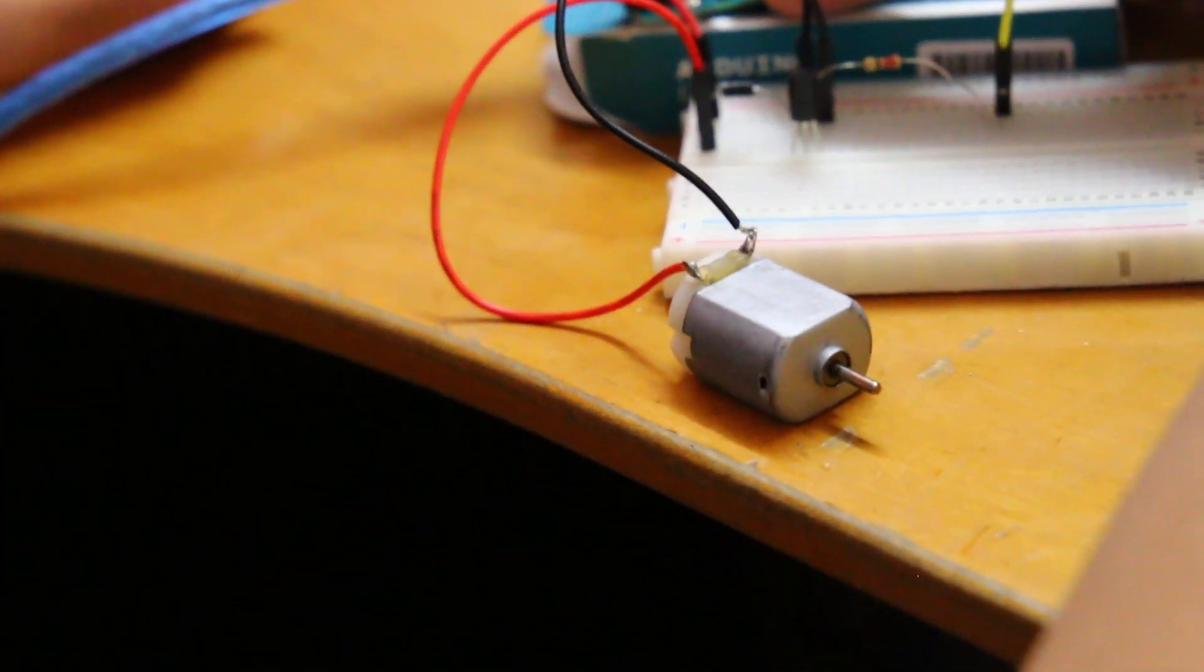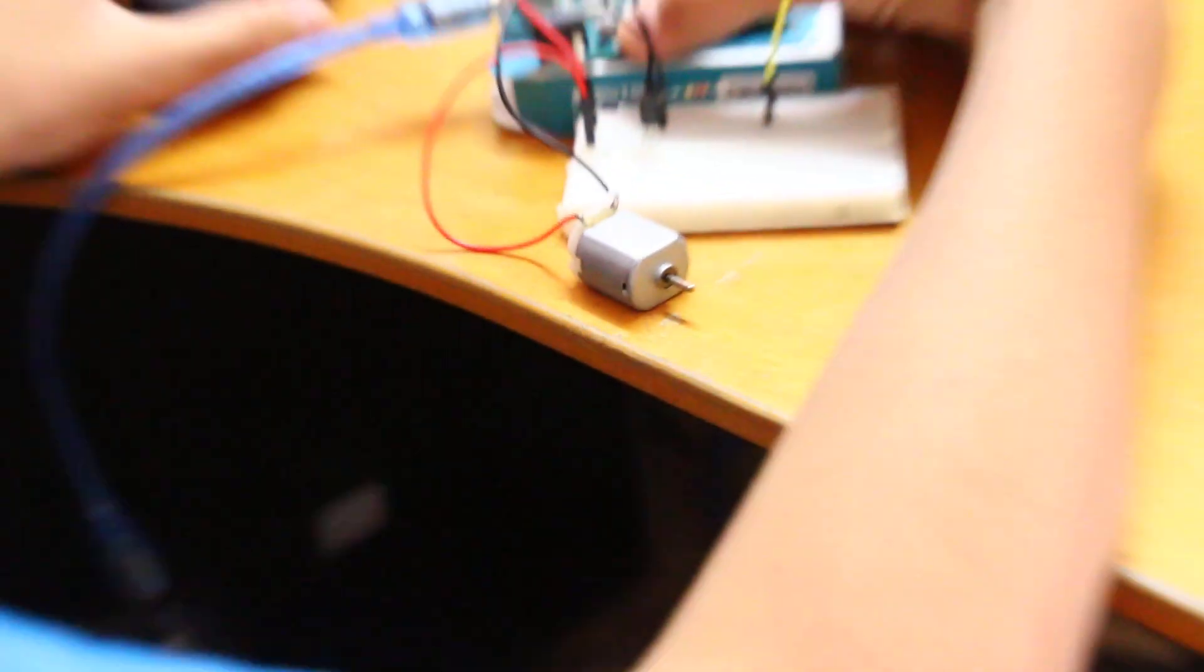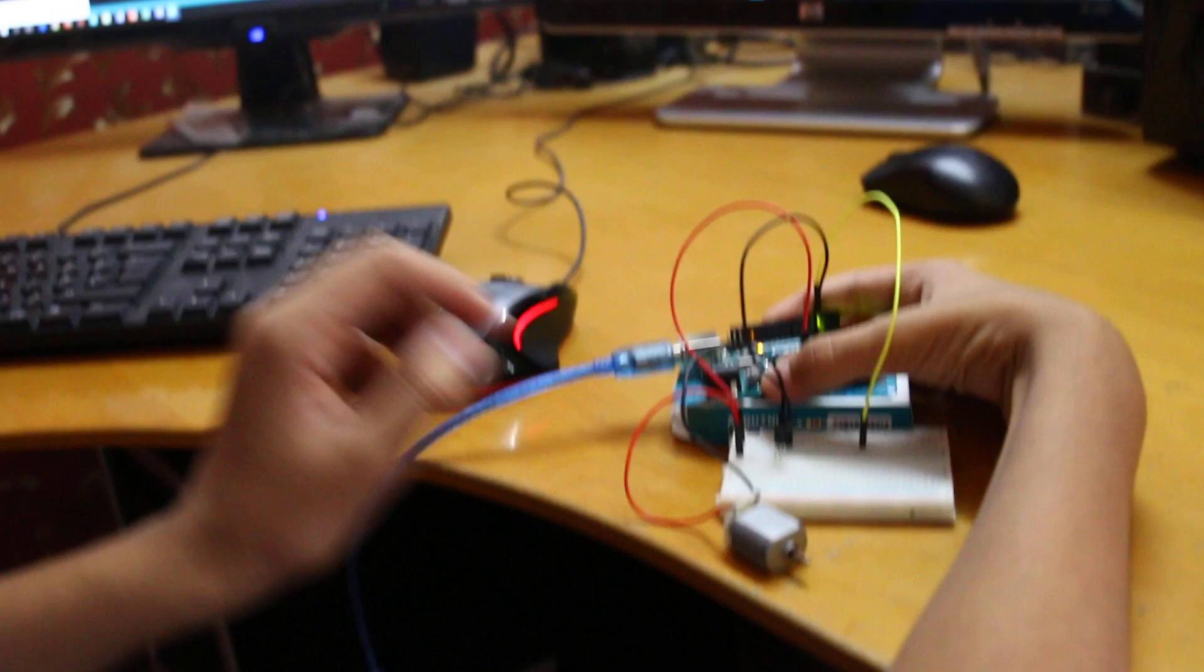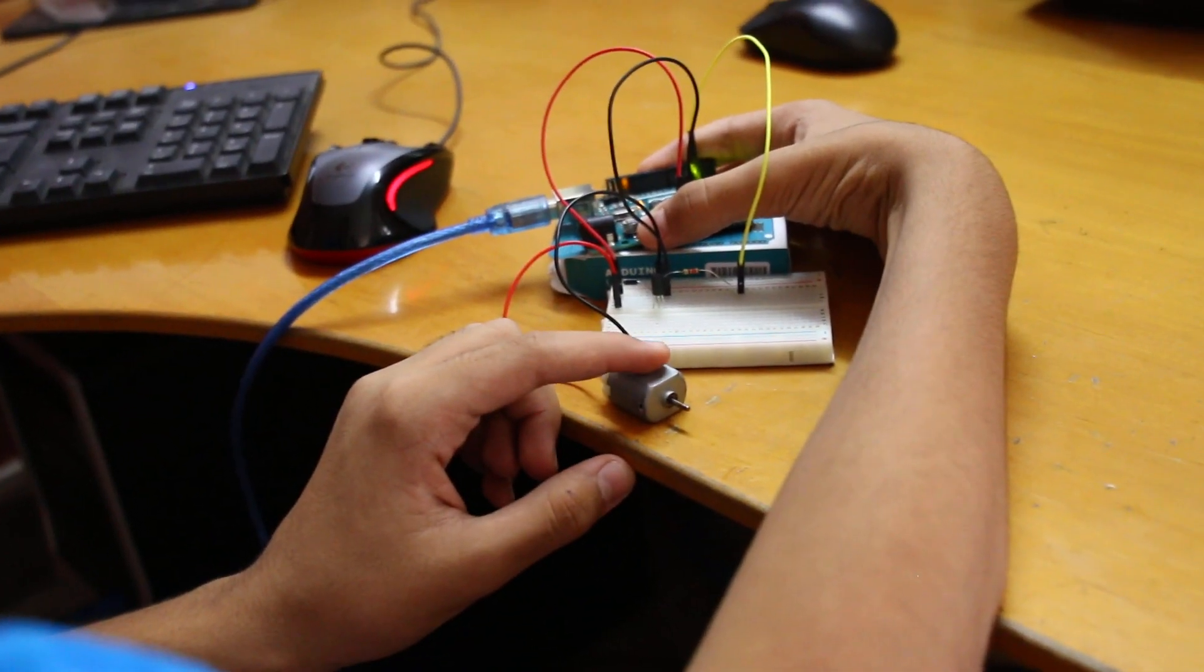So now to make it move, the Arduino PWM range from zero to 255. So let's try 255. It's going to be full speed. Now let's upload. And it's moving. You can hear that.